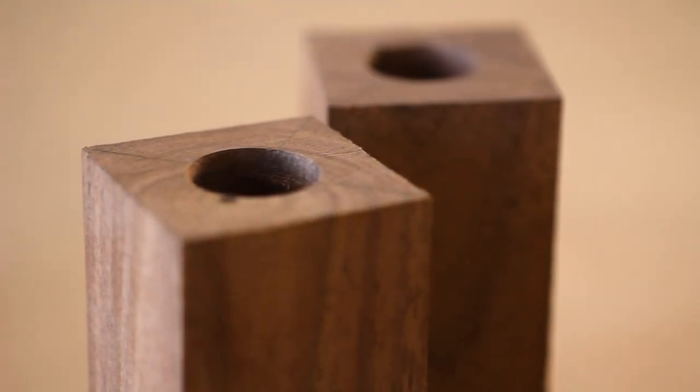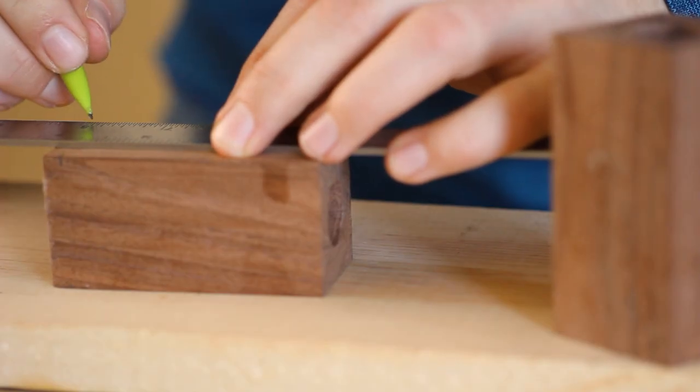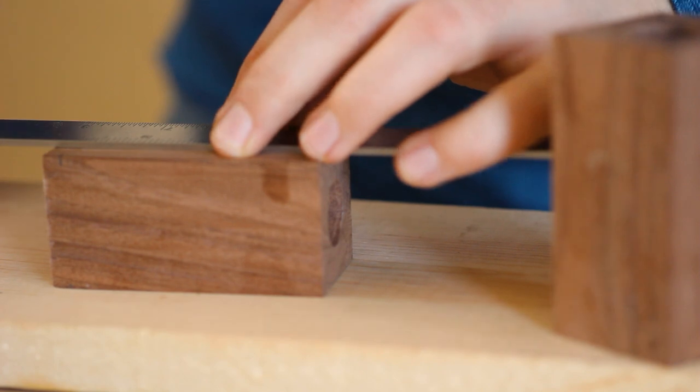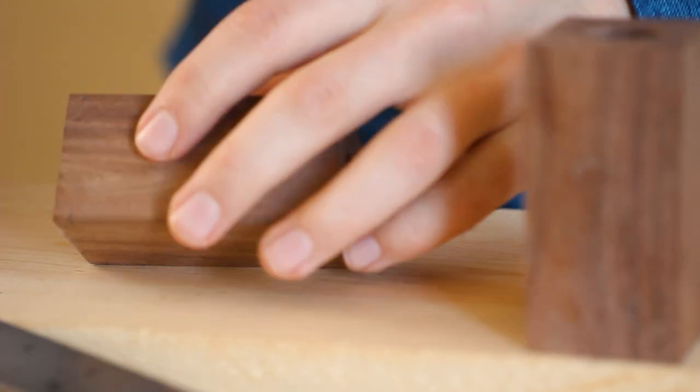With the ¾ inch holes drilled, it's time to give these blocks of wood some visual interest. I'm going to mark a line that goes around the piece a ¼ inch up from the bottom and slice it in.